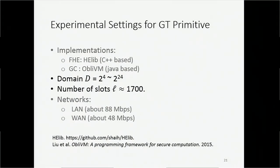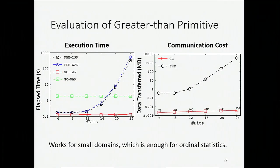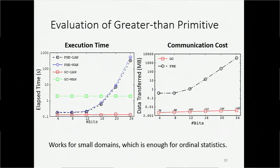We also compare our greater-than primitive with a garbled circuit implementation. We set the parameter l to about 7000, so we can encrypt 7000 integers into one single ciphertext. The left-hand side picture shows execution time and the right-hand side shows communication cost, with the horizontal axis indicating different input bit sizes — we compare four-bit integers up to 16-bit integers. Execution time and communication cost of our method grow exponentially with the input bit size, as expected, but for small domains such as 15 or 16-bit domains, our primitive runs pretty fast compared with the garbled circuit counterpart. We think this small domain is enough for common ordinal statistics.